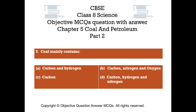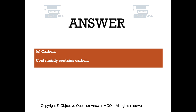Question number 5: Coal mainly contains — Option A: Carbon and hydrogen. Option B: Carbon, nitrogen, and oxygen. Option C: Carbon. Option D: Carbon, hydrogen, and nitrogen. The right answer is Option C: Carbon. Coal mainly contains carbon.